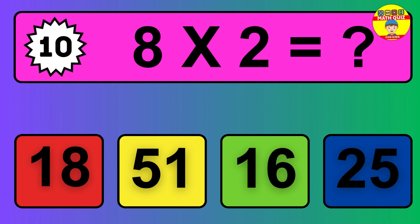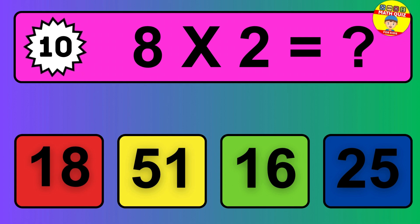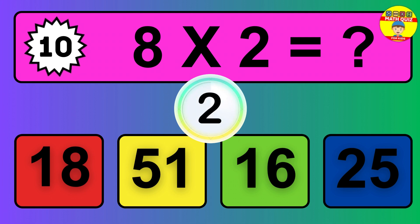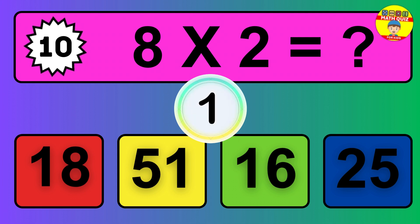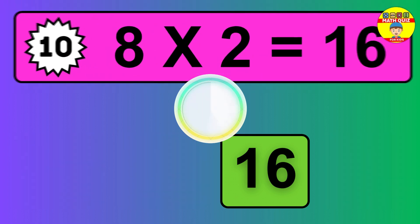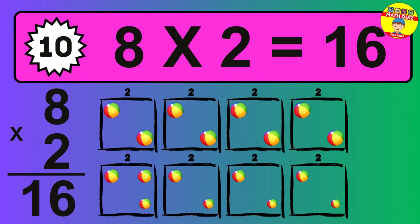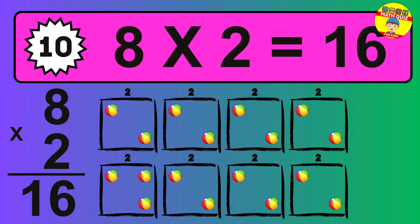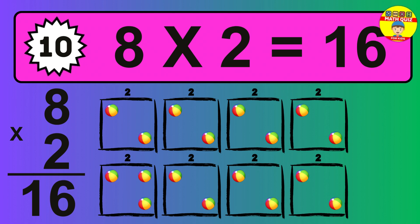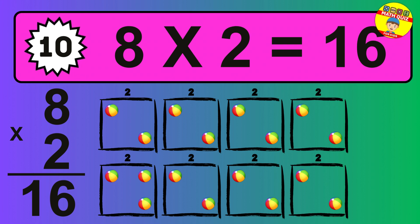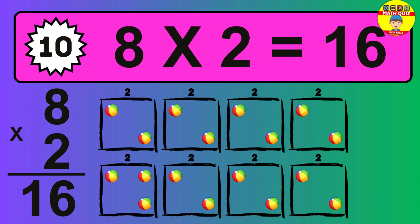Question 10. Eight times two equals what? The answer is eight times two is 16. To calculate, we have eight groups with two balls each one. So how many balls do we have? Sixteen balls.